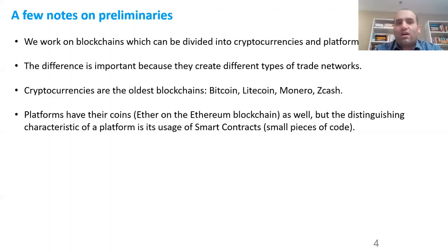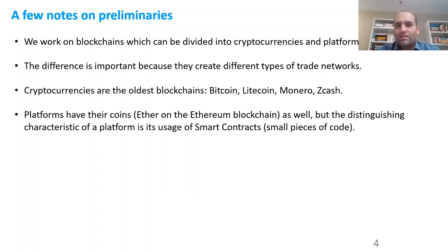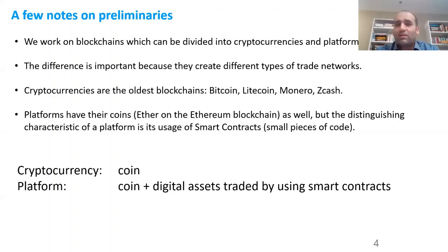Cryptocurrencies, in general, are the oldest blockchains — Bitcoin, Litecoin, Monero, Zcash. Then there are platforms that started after 2015. Platforms also have cryptocurrency on them, but the distinguishing feature is the use of smart contracts — small pieces of code stored on the blockchain network. Smart contracts are used to trade digital assets, which can be anything from digital Pokemon to your house on the blockchain. This decentralized finance of trading these assets is becoming bigger and bigger.